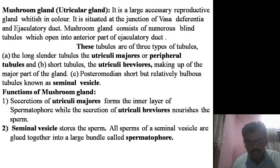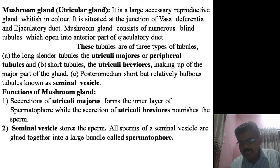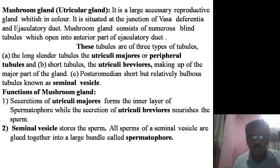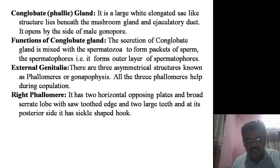The secretions of all three parts of the mushroom gland serve different functions. The secretions of utricular majoris form the inner part of the spermatophore, while the secretion of utricular minoris nourishes the sperm. The seminal vesicle stores the sperm, and all the sperms of the seminal vesicles are glued together into a large bundle called the spermatophore.